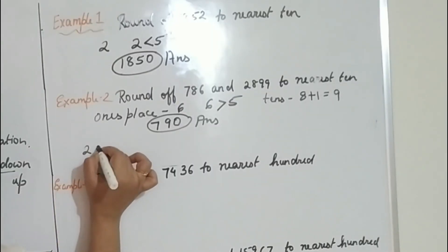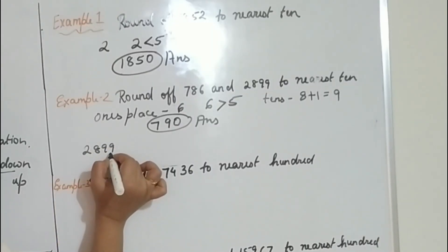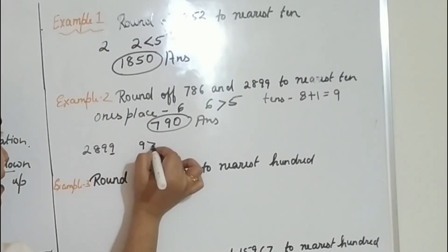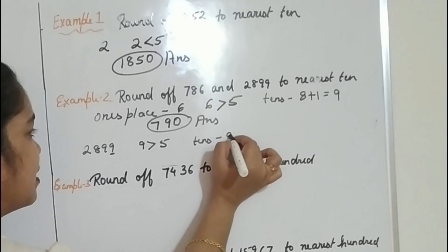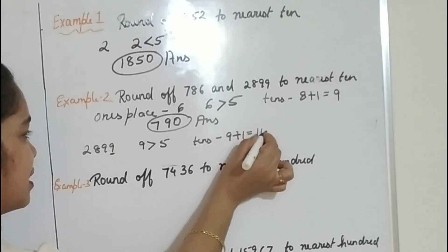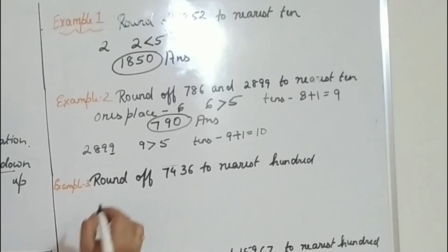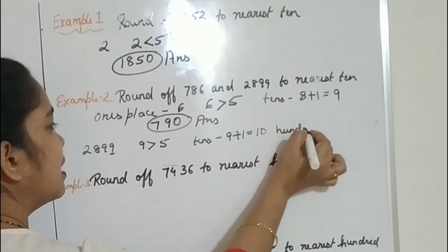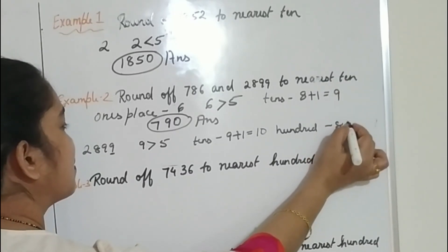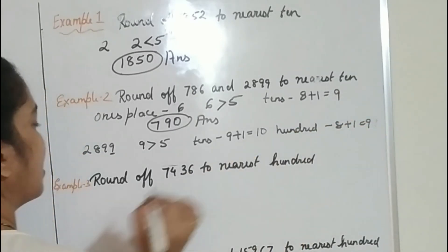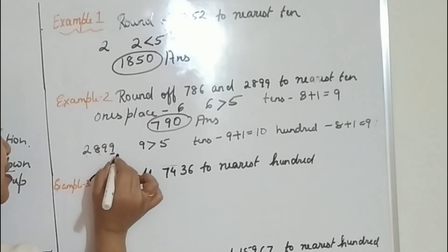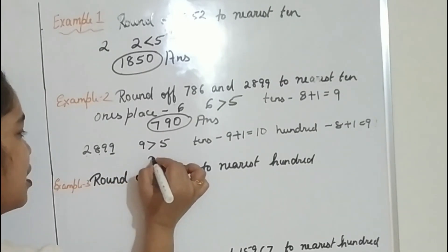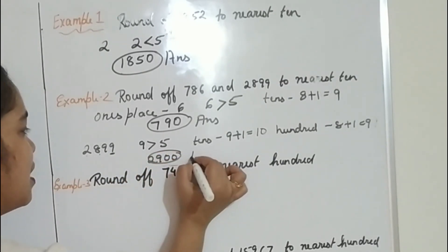Now the number is 2899. We have to see the number in the 1s place — it is 9. Since 9 is greater than 5, in the 10s place: 9 plus 1 equals 10. So 10 tens is 100, meaning in the 100s place the number will also be increased — 8 plus 1 equals 9. So the final answer is 2900.